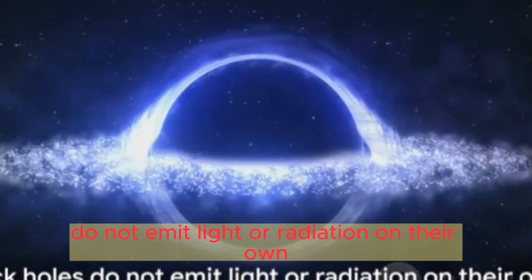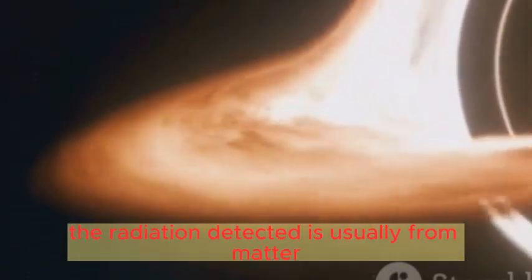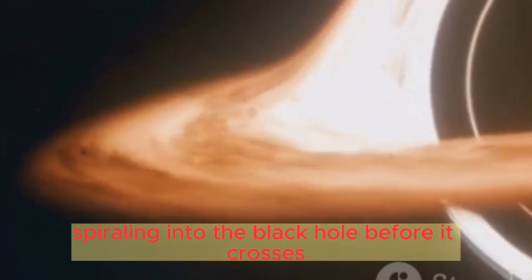Black holes, conversely, do not emit light or radiation on their own. The radiation detected is usually from matter spiraling into the black hole before it crosses the event horizon.